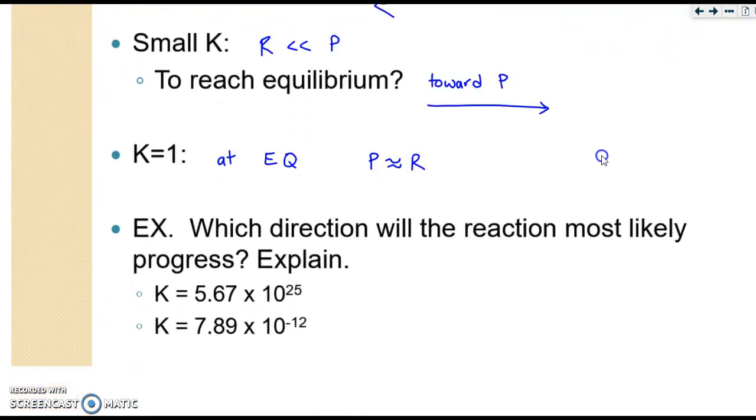Now, a type of question you might see on the test is something like this. Which direction will the reaction most likely go? And then briefly explain. So the first one is a large K. Notice the exponent. So you would say that it would shift towards the reactants. So it's going to shift to the left. And the second one is a small K. So instead, you would say that it would go towards the products or shift to the right.